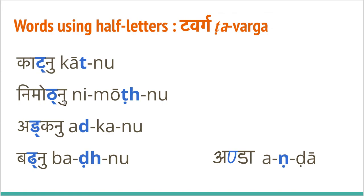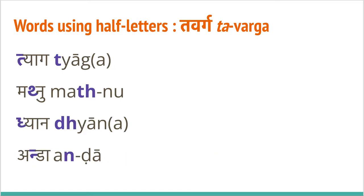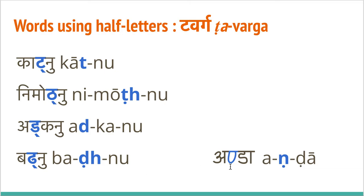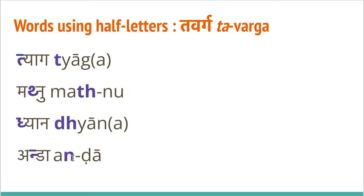Now half letters for ta-barga: kaatnu, moatnu, adkanu, badnu. The last one is anda — this is more or less pronounced as the na sound. Next for ta-barga: tyag, mathnu, dhyana or dhyan. I have reproduced anda here because this is the more common pronunciation of anda — this is the more common writing but this is the more common pronunciation: anda.